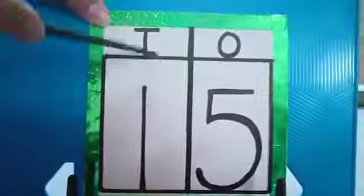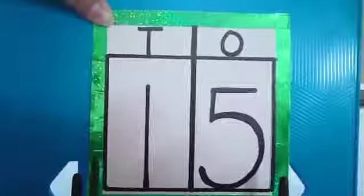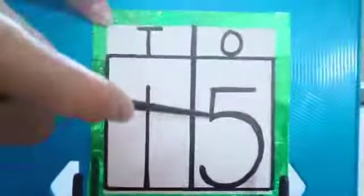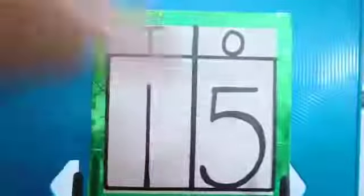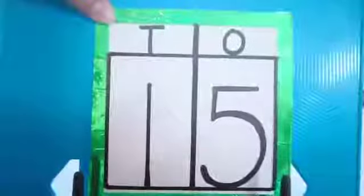This is number 15. So how do we write 15? We will write 1 below T, that is 10, and 5 below O, that is 1. 1 and 5 makes 15. So let's count: 1, 2, 3, 4, 5.